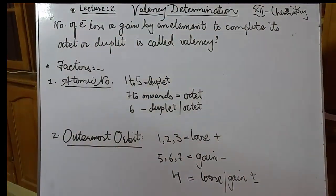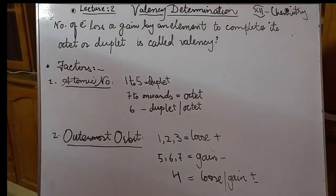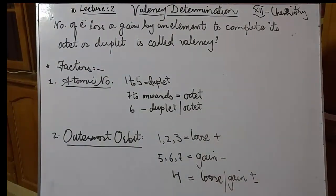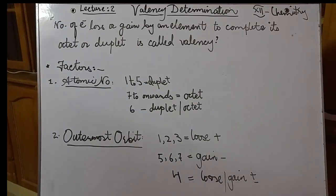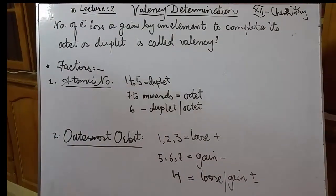This is called valency. For an element to become stable, they have to complete their octet, that is eight electrons in the outermost shell, or sometimes a duplet. For example, helium needs two electrons to complete its outermost shell because it has only two electrons — atomic number two. When an element requires a specific number of electrons to lose or gain to complete its octet, that number of electrons is called the valency of that element.